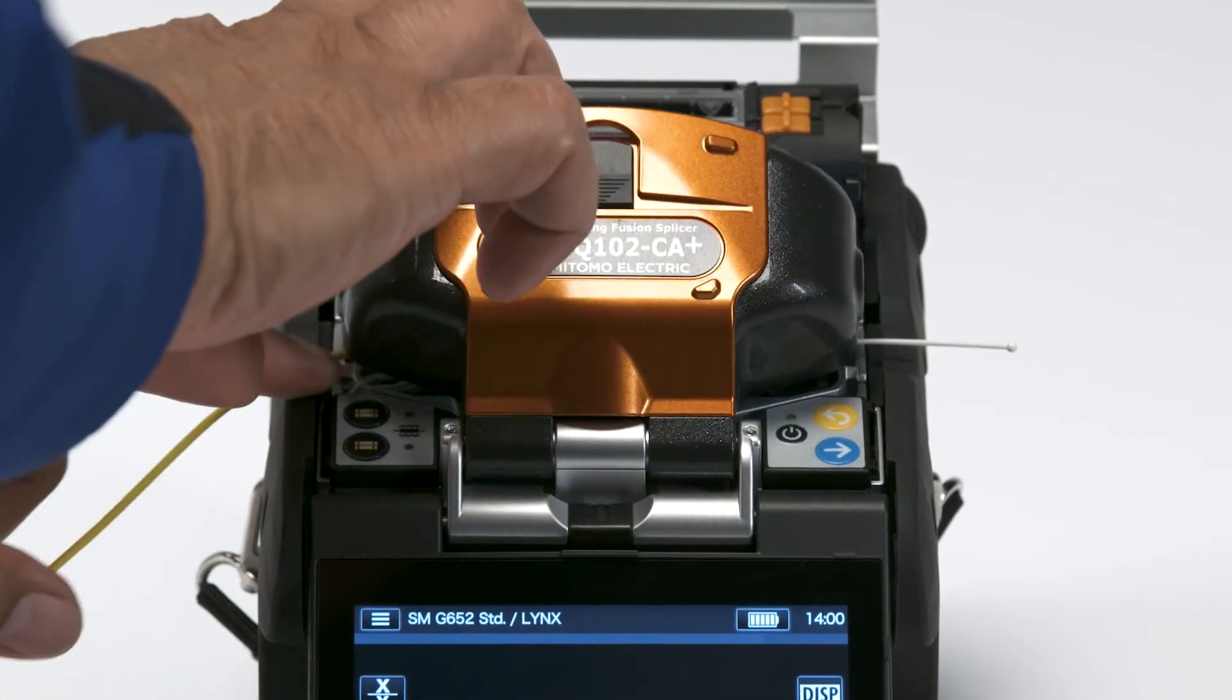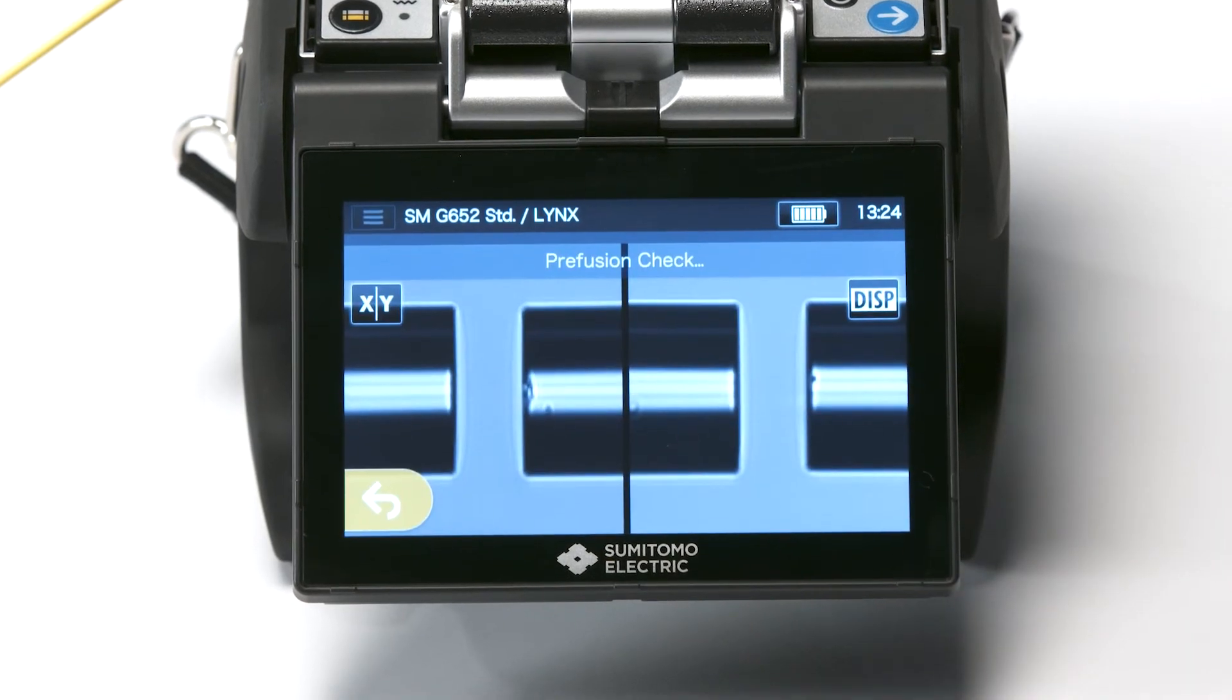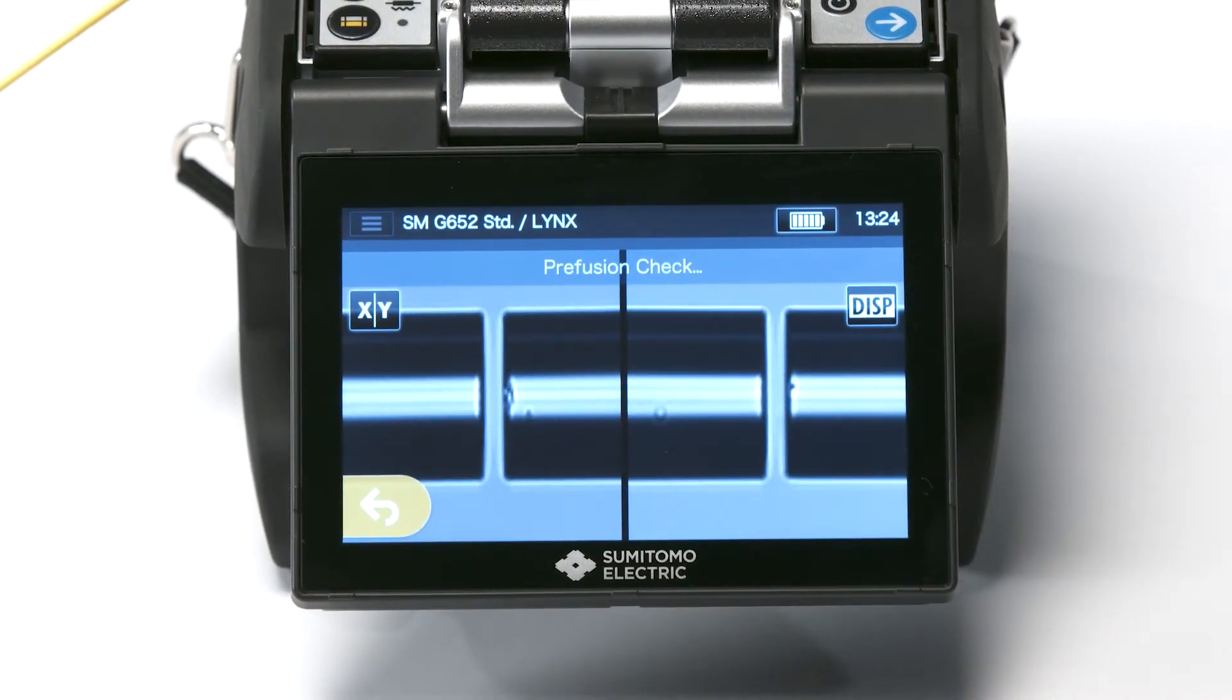Close the hood. Now, you're ready to splice. To perform the splice, engage the set icon on the touch screen monitor. Fibers will fuse.